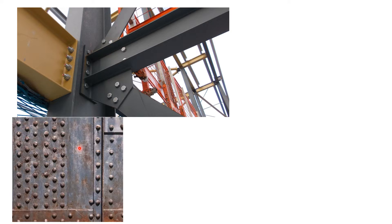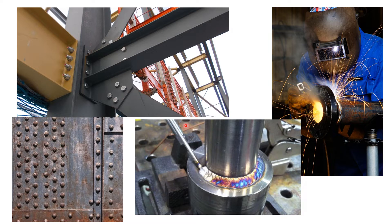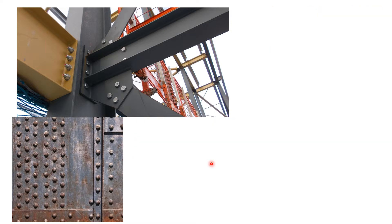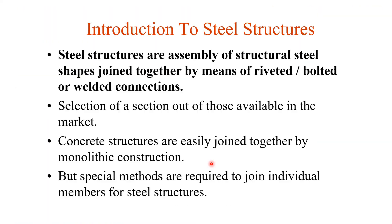In a riveted connection, hard steel passes through holes and then by a machine or by hammering, rivets are made. The third connection type is welding, which is used for connecting steel members together.